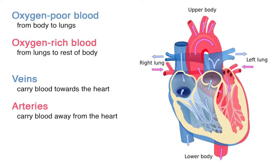The heart takes in oxygen-poor blood from the body, shown in blue, and delivers it to the lungs where it gets oxygenated. The red portion shows oxygen-rich blood traveling from the lungs through the heart to the rest of the body. Remember, veins bring blood towards the heart. Arteries carry blood away from the heart. You can remember the A for arteries and away.